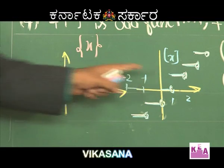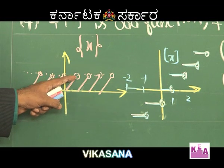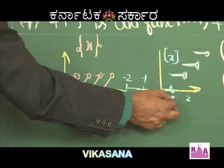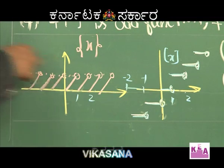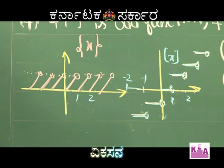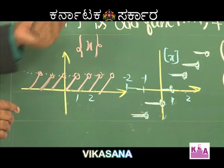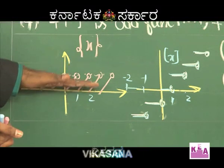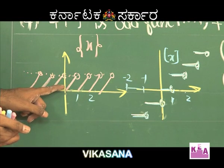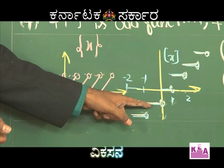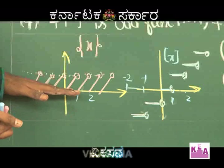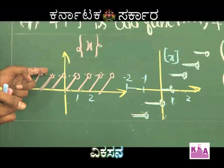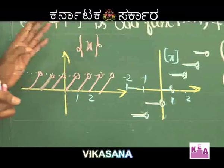Both fractional part and integral part of x are discontinuous at x belonging to Z, because at integer values the function shifts. The fractional part of x is always non-negative, lying between 0 (inclusive) and 1 (exclusive). The integral part of x can be positive or negative. Neither f(x) nor g(x) is an even or odd function.